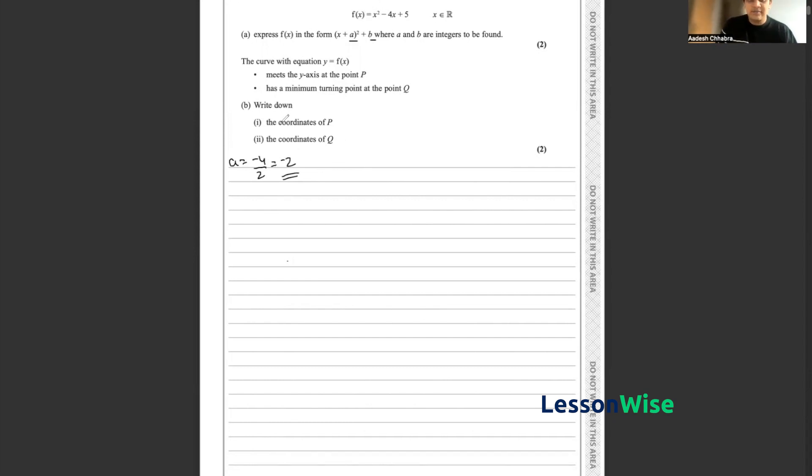So now using this value of a, we can substitute this value into the form that we want. So if we want the form (x + a)² + b, if we substitute the value of a into this form, we should get (x - 2)² + b.